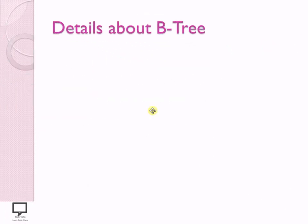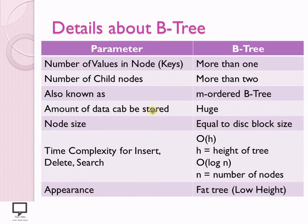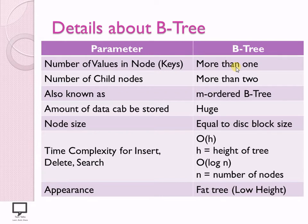Now let's start with the summary. First we will see what is B-Tree. Here I am going to explain in very short what is B-Tree with this table. Different parameters are listed and what B-Tree says about each. The very first thing: number of values in a node, that is number of keys, are more than one in B-Tree. If I compare it with binary tree, they are fixed — either 0, 1, or maximum 2. But this is not the case with B-Tree.